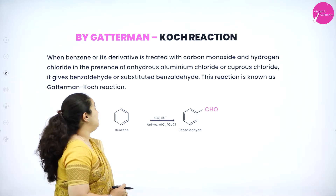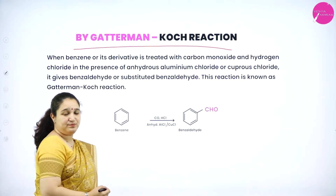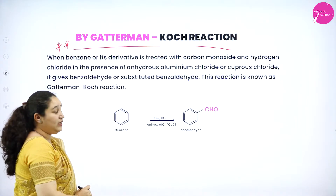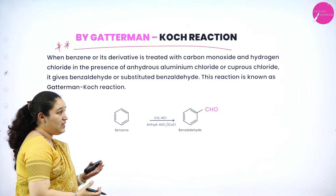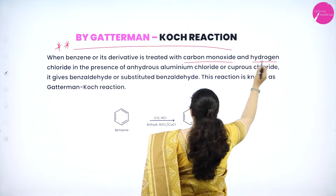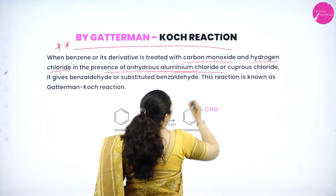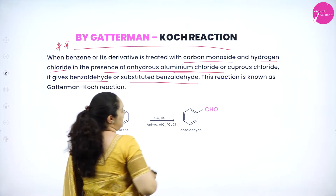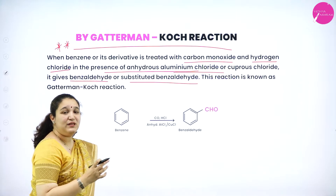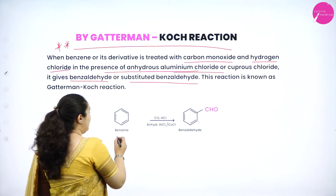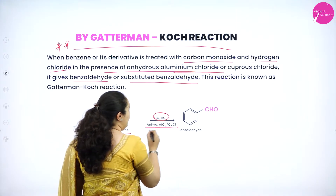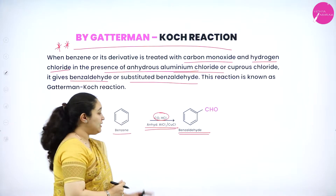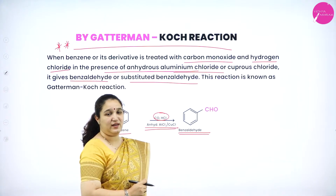The next method is by the Gattermann-Koch reaction. This reaction is very important for your exams. We take benzene or its derivatives and treat it with carbon monoxide and hydrogen chloride in the presence of anhydrous aluminum chloride or copper chloride as the catalyst to get benzaldehyde or substituted benzaldehyde. If we take substituted benzene we get substituted benzaldehyde in this process.